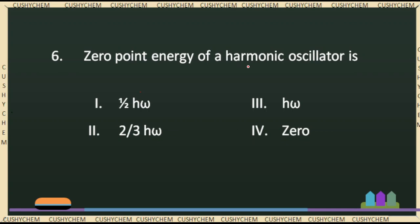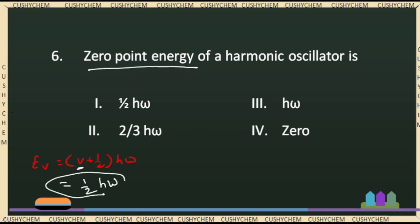Next, the zero-point energy of the harmonic oscillator. Using the energy formula for the harmonic oscillator: Eᵥ = (v + ½)ħω. For zero-point energy, we set v = 0. Then E₀ = ½ħω. This is the right answer.